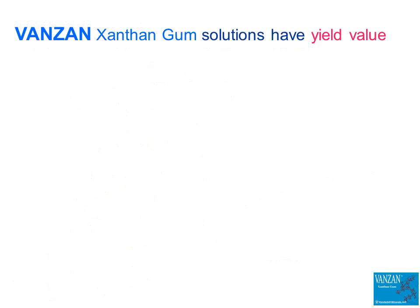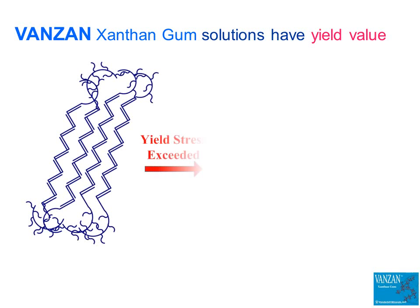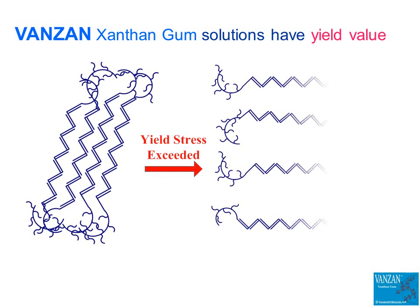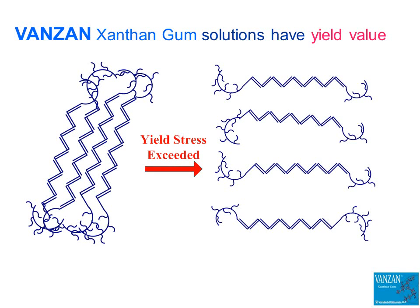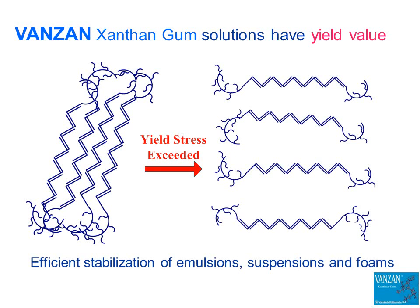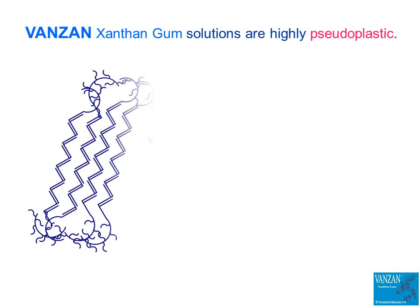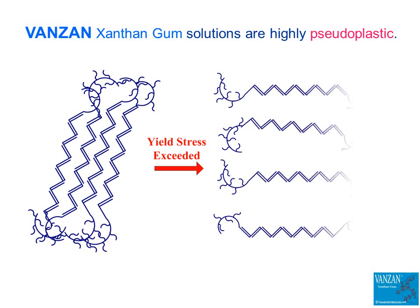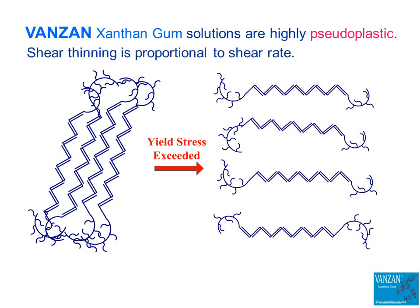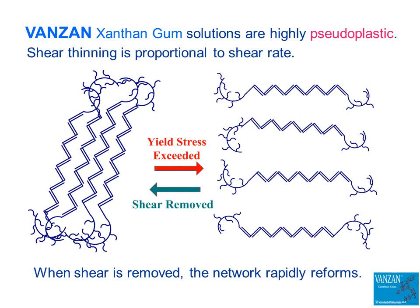This colloidal network explains the characteristic rheological properties. A certain force — the yield stress — must be exerted before the network can be disrupted. Xanthan gum solutions thereby provide efficient stabilization of emulsions, suspensions, and foams. Once the yield stress is exceeded, these solutions are highly pseudoplastic: individual polymer molecules align in the direction of the shear force, and the extent of this disaggregation is proportional to the shear rate. When shear is removed, the network rapidly reforms.